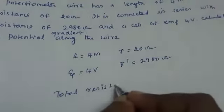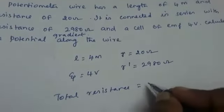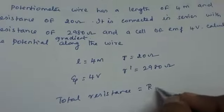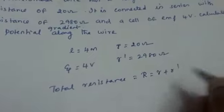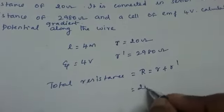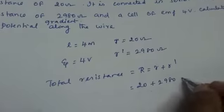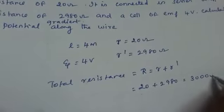What is the total resistance? The total resistance is equal to sum of these two. Total resistance R is equal to R plus R dash, that is 20 plus 2980, that is 3000 ohm.